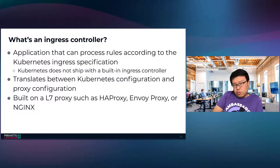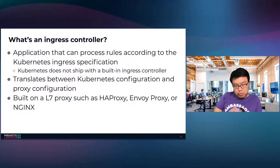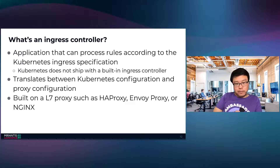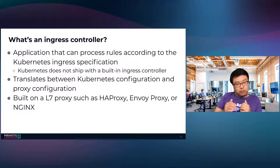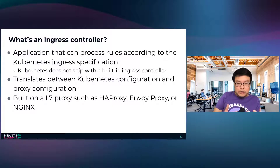So what exactly is an ingress controller? An ingress controller is an application that can process rules according to the Kubernetes ingress specification. Strangely, Kubernetes does not actually ship with a built-in ingress controller — you might think getting traffic into a cluster is a pretty common requirement, and it is — but it turns out this is complex enough that there's no one-size-fits-all ingress controller. There is a set of ingress rules that specify how traffic gets routed into the cluster, and you need a proxy that can actually route traffic to the different pods. An ingress controller really translates between the Kubernetes configuration and the proxy configuration. Common proxies for ingress controllers include HA Proxy, Envoy Proxy, and NGINX.